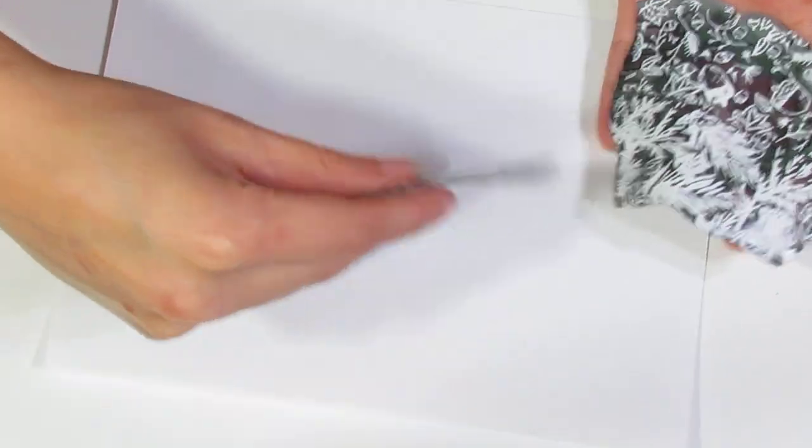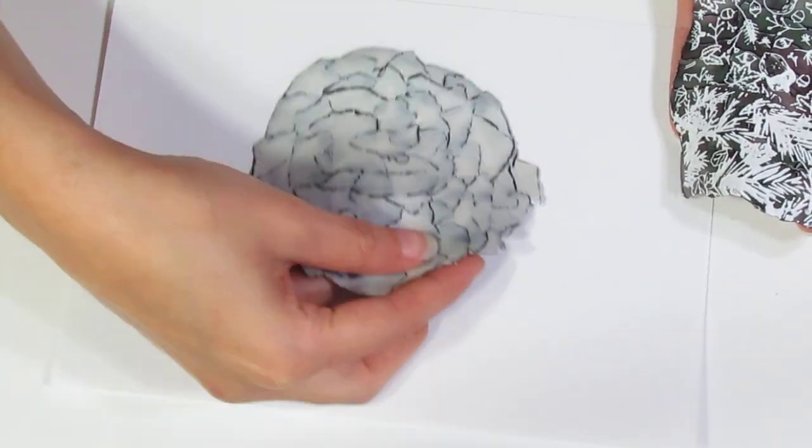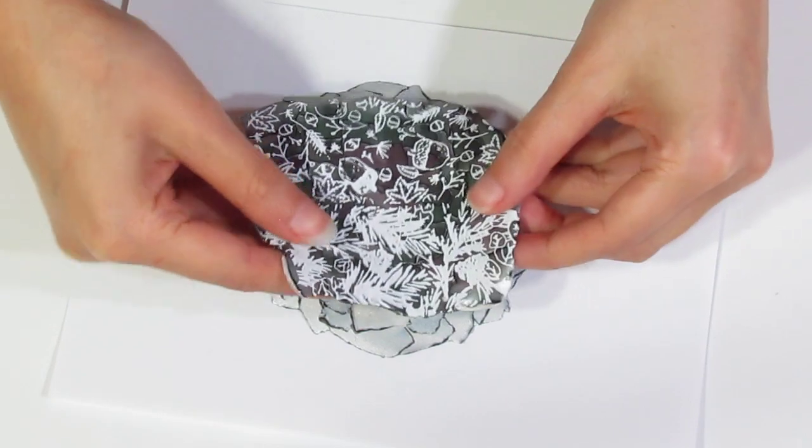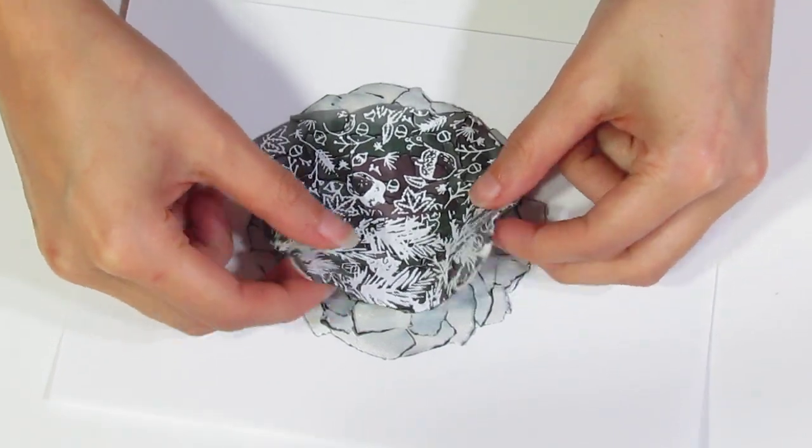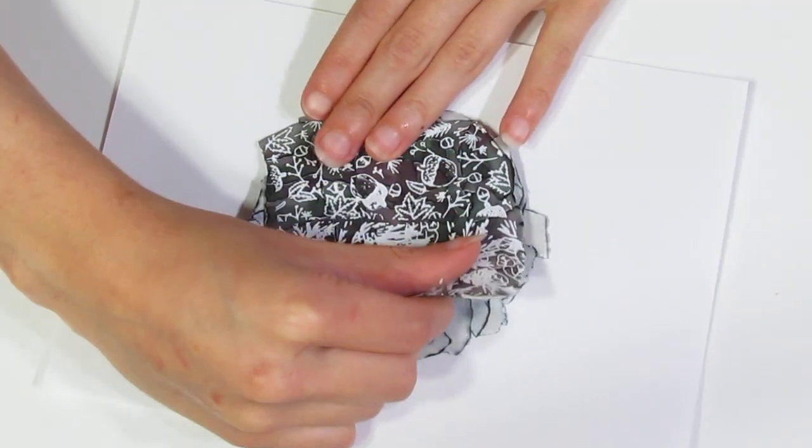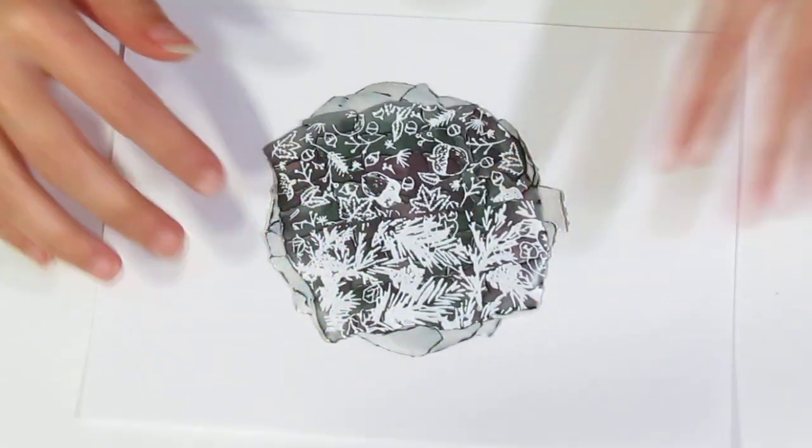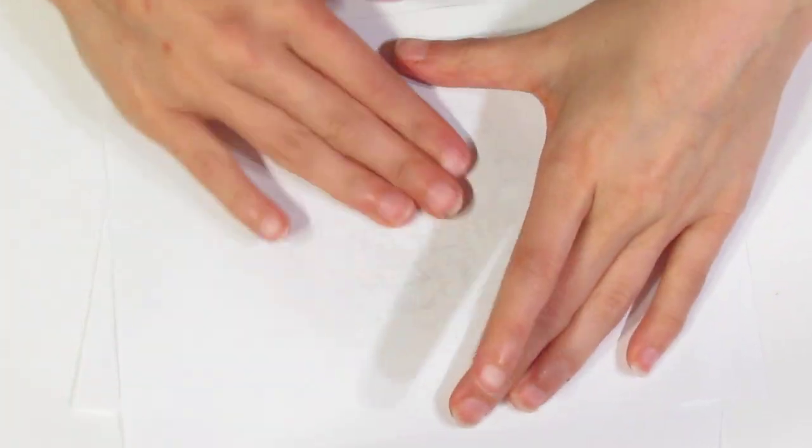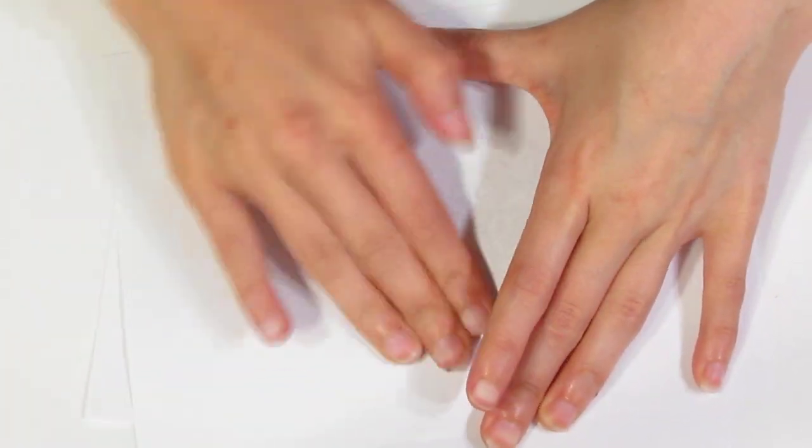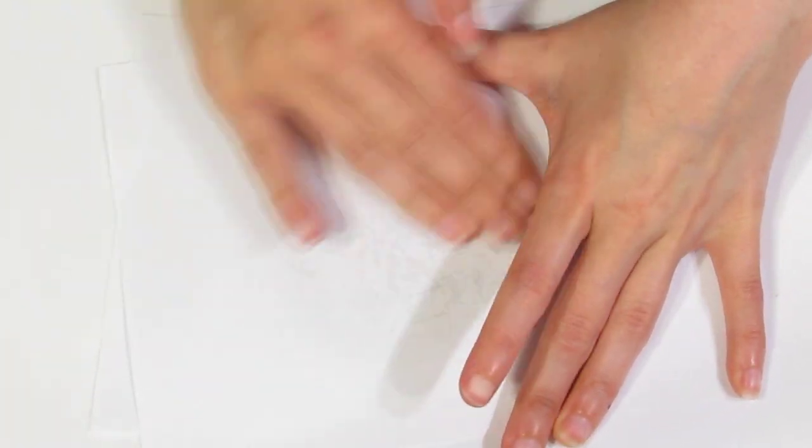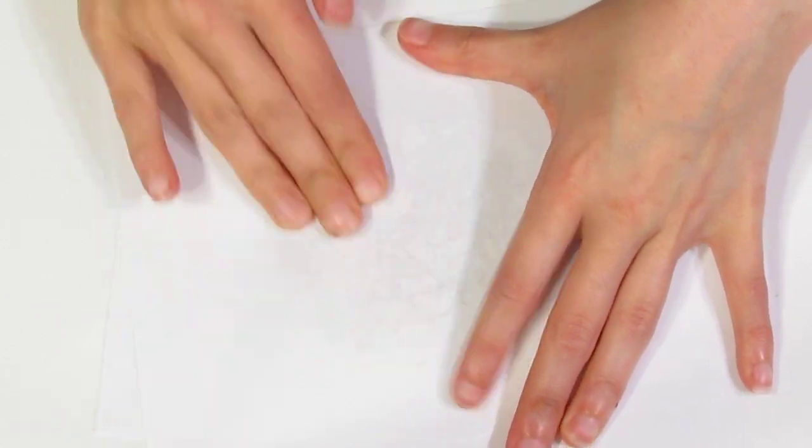And I'm going to take this one, flip it upside down, place this one on, smooth to get rid of air bubbles. Use a piece of paper just to smooth those two together. Like so.